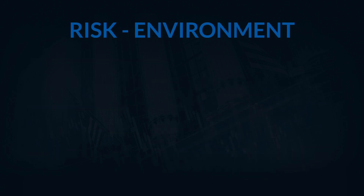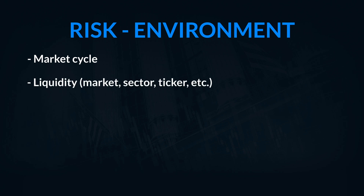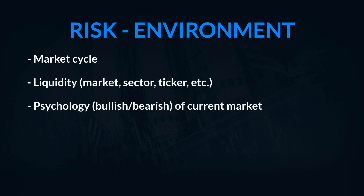We also want to consider the risks in the environment that we're trading in. Some factors to focus on for environmental risk include finding the right setups for the right market cycles, taking into consideration overall liquidity, and factoring in bullishness or bearishness for the environment and our own trades. Another consideration is where's the magnitude in the market? If we're at the beginning of a bear market, the magnitude is that many things are having big moves down, and we have to make sure we have strategies that go with that magnitude.